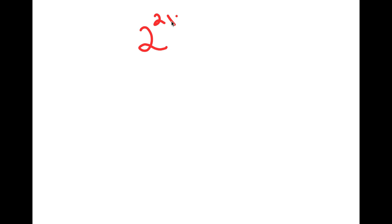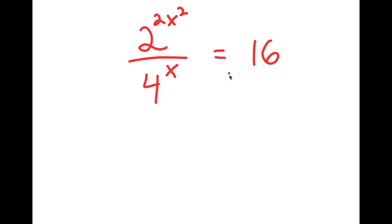For this video, I'm going to be solving the equation 2 to the power of 2x squared over 4 to the power of x is equal to 16. At first glance this equation might seem really complicated, but I promise you it's easier to solve than what you think. So let's break this down a little.